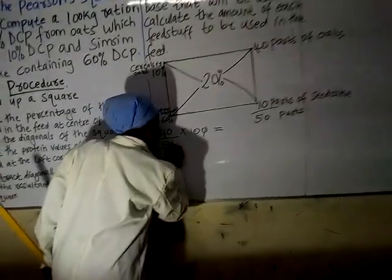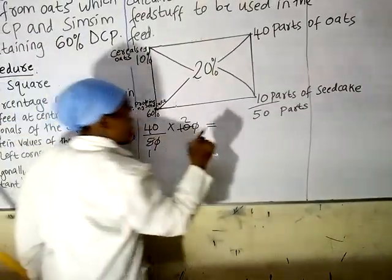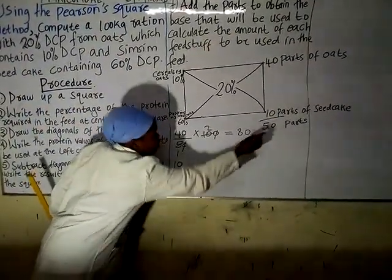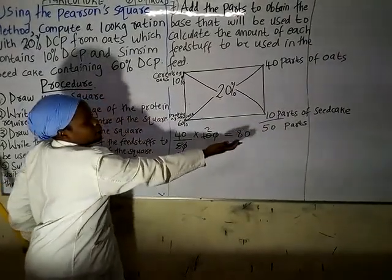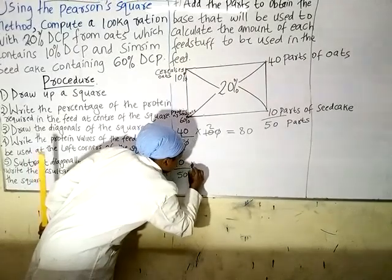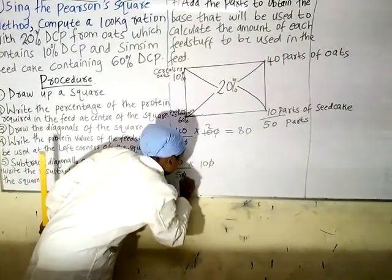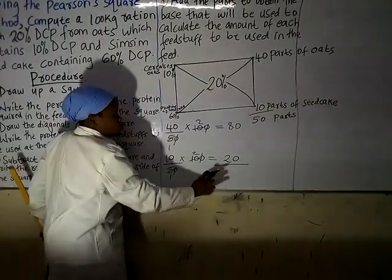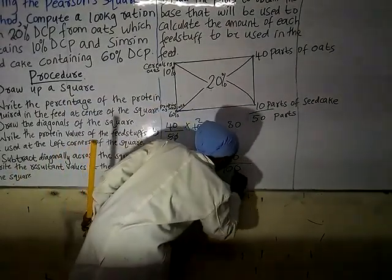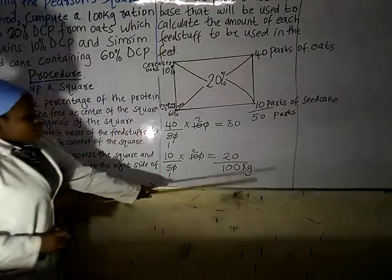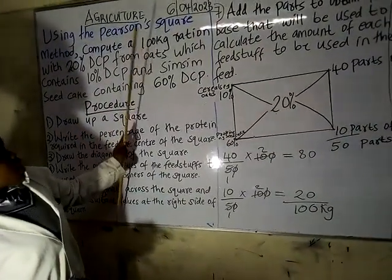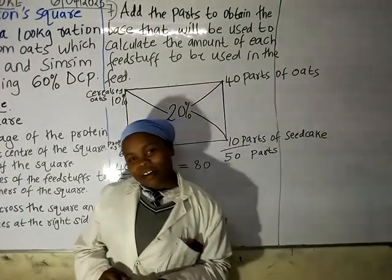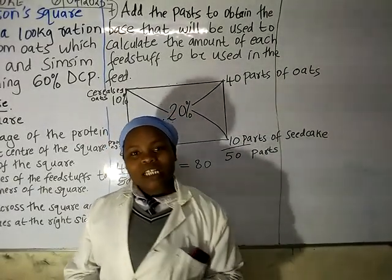40 divided by 50 times 100 gives us 80 grams of oats. Then you take 10 parts of seed cake divided by 50 parts times 100, whereby you get 20 grams of seed cake. When we add these two: 80 plus 20 equals 100 grams, confirming our 100 gram ratio. That is the end of our lesson. Thank you for your time, and I would like you to subscribe and share.